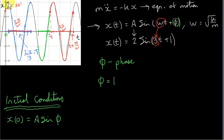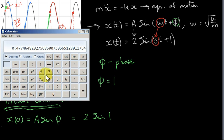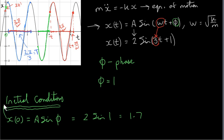Even though the amplitude is 2, the initial position here is actually less than 2. For our example, the initial position is 2 sin(1) — remember, angles are in radians. Computing: sin(1) times 2 gives approximately 1.7 to one decimal place. So this value of x at t = 0 is 1.7. We set the timer when the mass is at position 1.7 and trace the motion for subsequent times. So φ determines the initial value of x, and of course A also determines it.